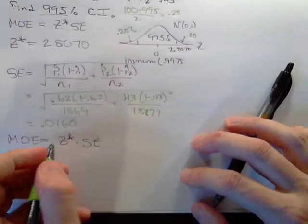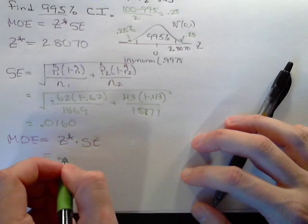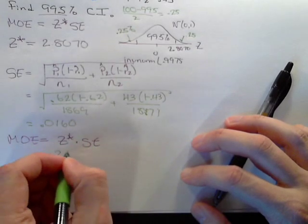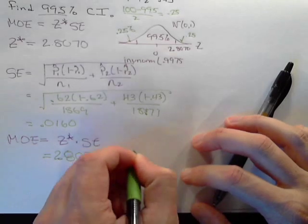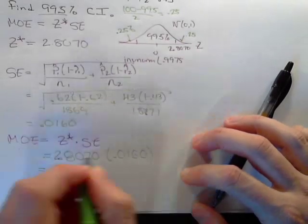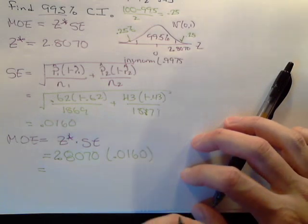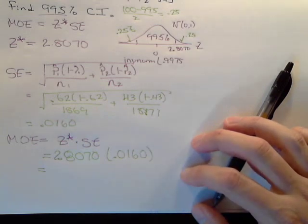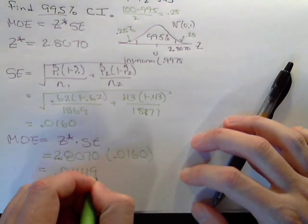For this situation, the critical value is 2.8070 times 0.0160, which is 0.0449.